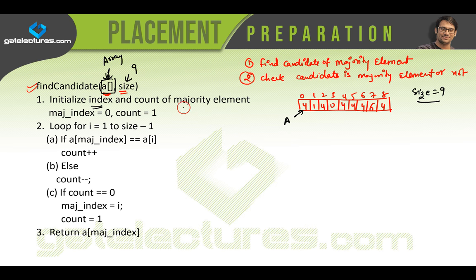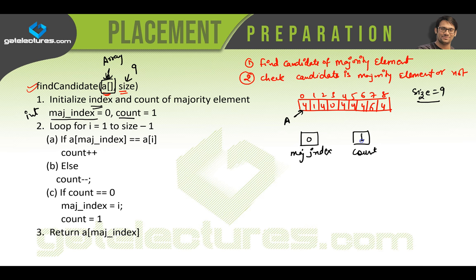The first step is to initialize the index and count of the majority element. We have two integer variables: majority index, `maj_index`, initialized to 0, and `count` initialized to 1. The `maj_index` variable represents which element we are currently tracking as the candidate.